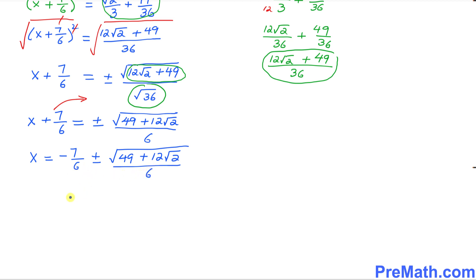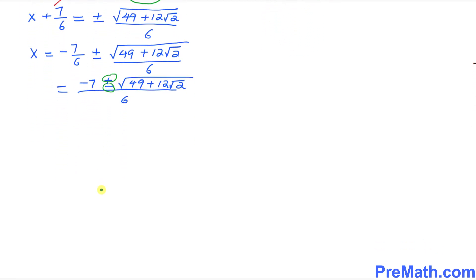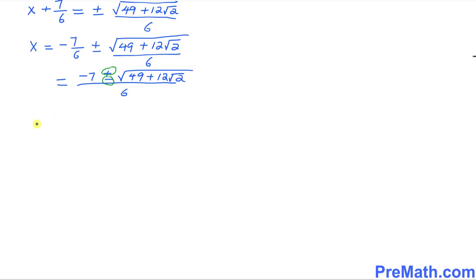Now I'm going to split the sign of both these negative and positive signs. I can do this. I can write x equals to the first solution is going to be (-7 + √(49 + 12√2))/6.